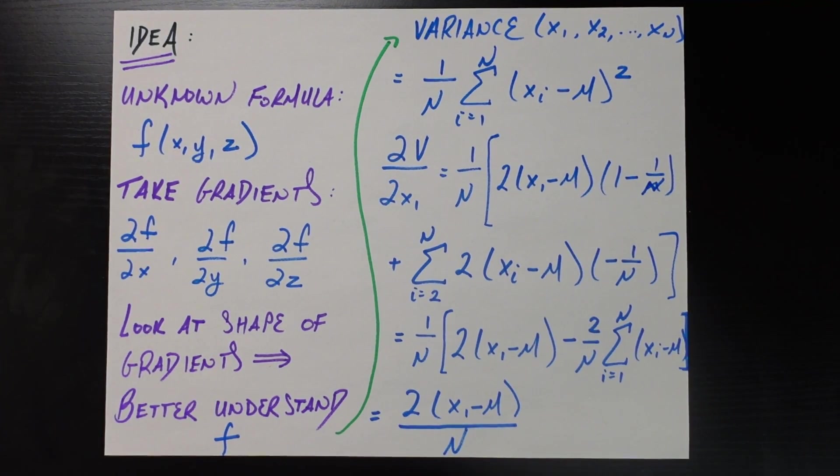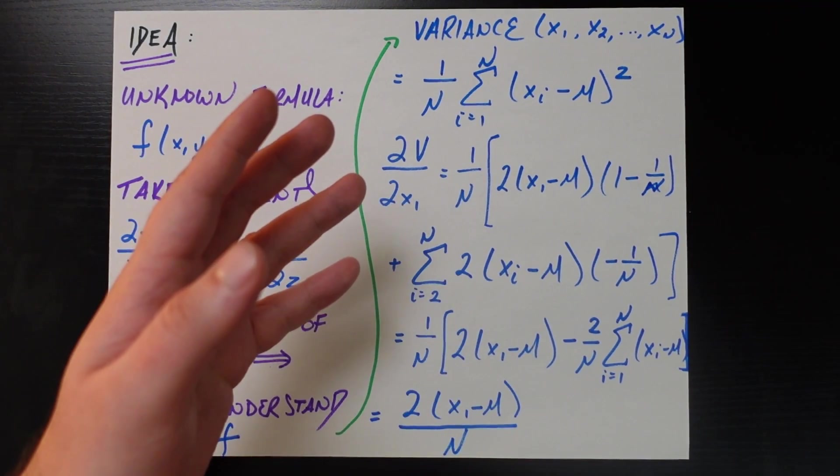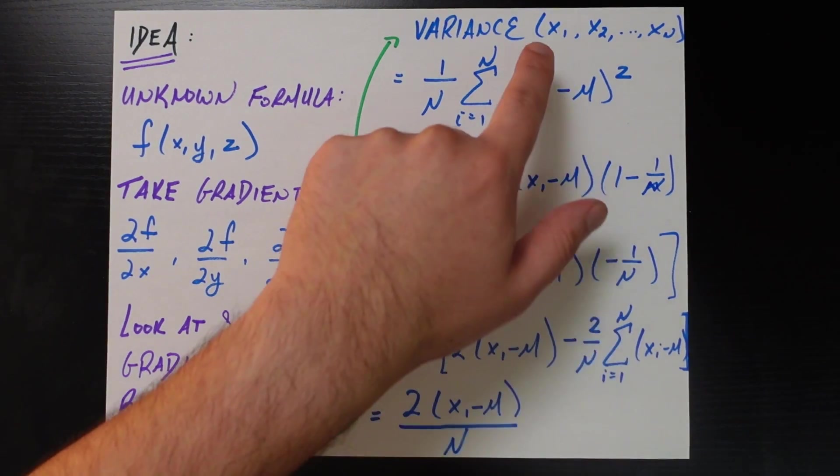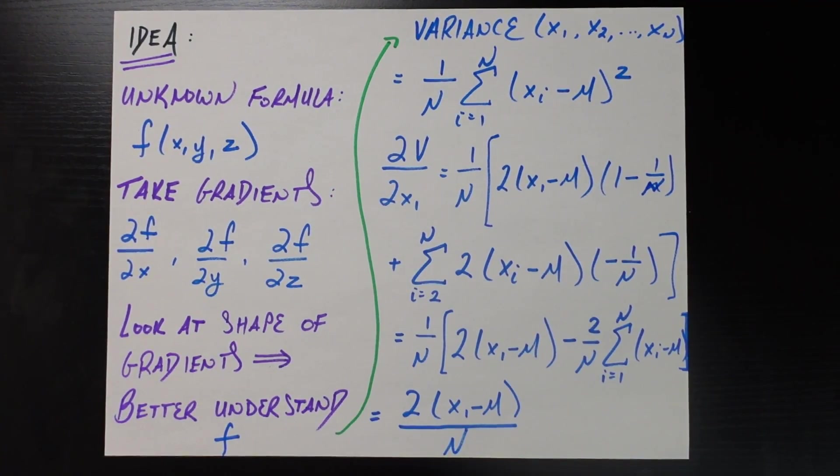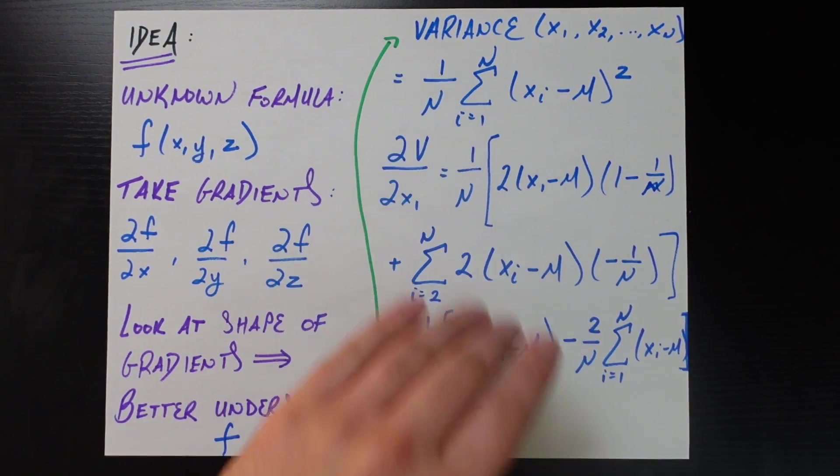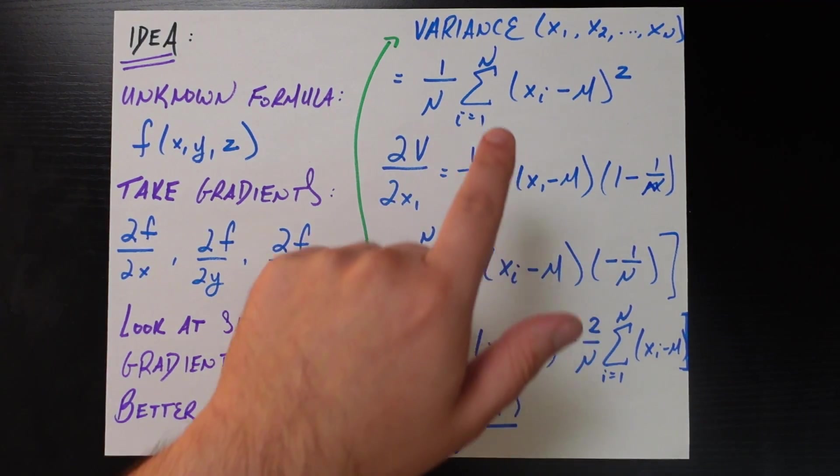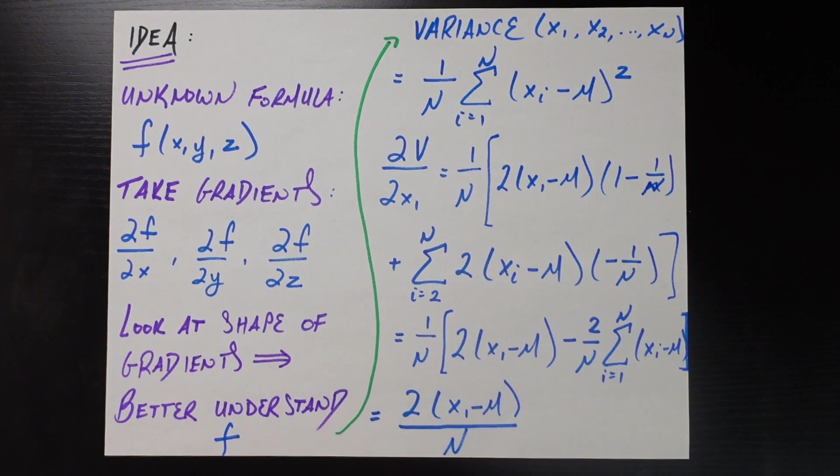And so let's do a couple more examples to really showcase the power of this philosophy. So for this next example, we'll throw it way back to when you first started learning statistics, you probably learned right after learning about the mean of a set of numbers, you probably learned about the variance of a set of numbers, x1, x2, all the way to xn. And so this formula should look very familiar to you, it's the variance of a set of n numbers, it's simply the sum of the squared deviations of those numbers from their mean, all divided by the number of numbers that there are, n.